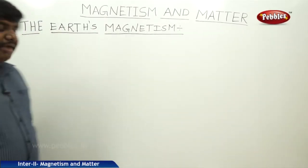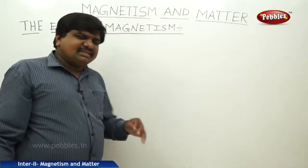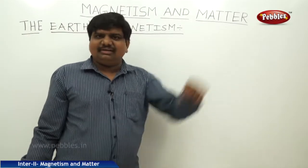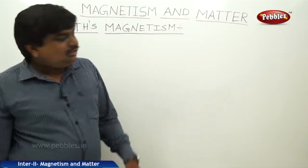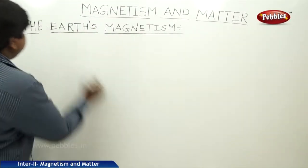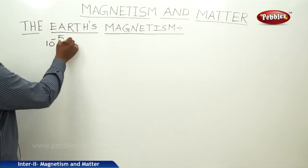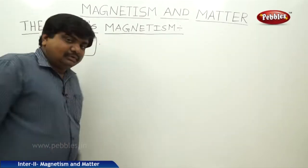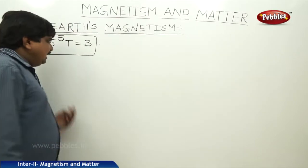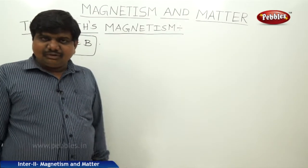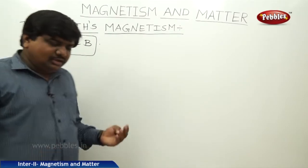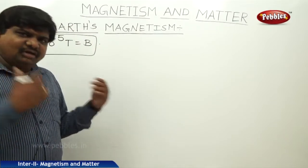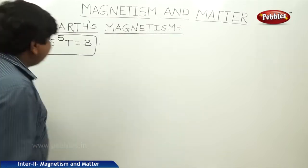Now we will discuss the earth's magnetism. The magnetic field strength of the earth is not constant; it changes with respect to the geographical location on the earth. But on average, the magnetic field strength of the earth is maintained to be in the order of 10 to the power of minus 5 tesla. Many earlier theories treated earth like a freely suspended magnet, though no single theory fully explained it. One familiar explanation is the dynamo effect.